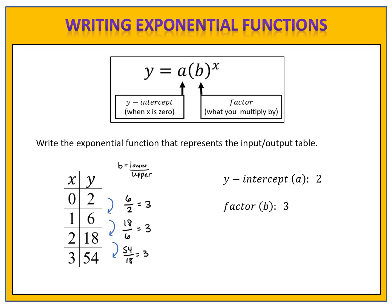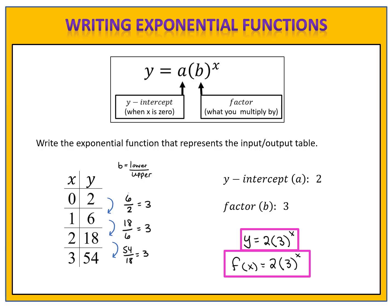Now that we know the y-intercept and the factor, we can write the equation. y equals a times b to the x becomes y equals 2 times 3 to the x power. We could also write this in function notation, replacing y with f of x: f of x equals 2 times 3 to the x power. Either option is acceptable and correct.